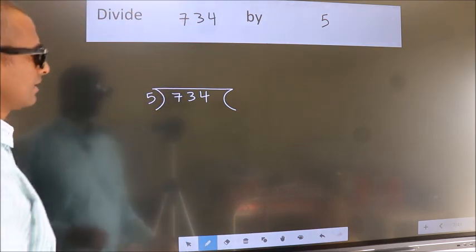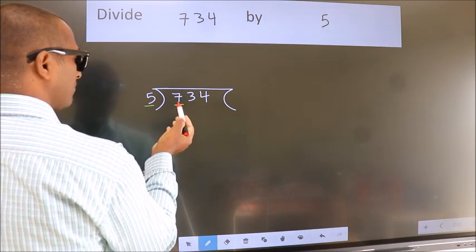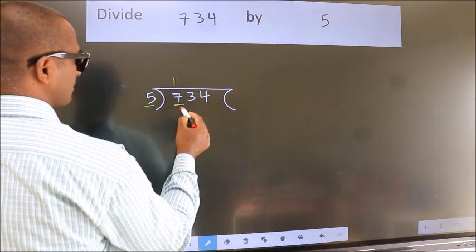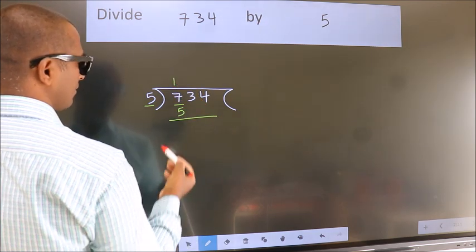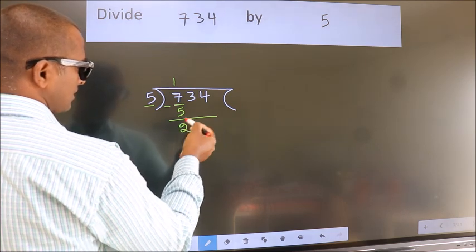Next, here we have 7, here 5. A number close to 7 in the 5 table is 5 once, which is 5. Now we should subtract. We get 2. After this,